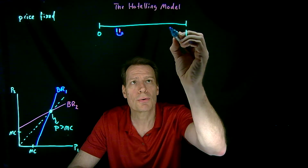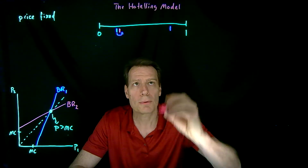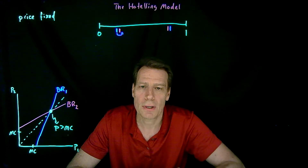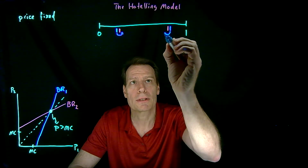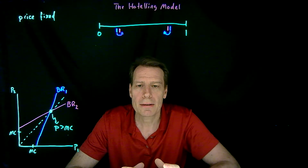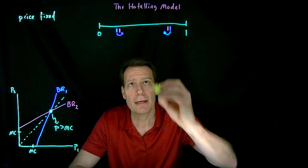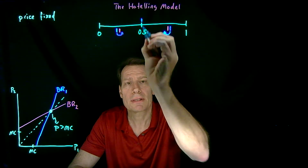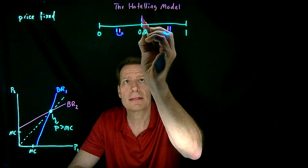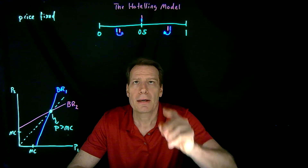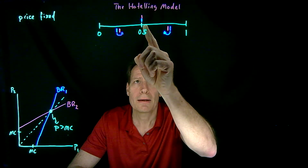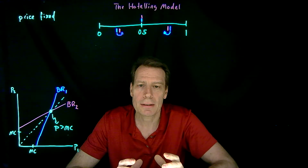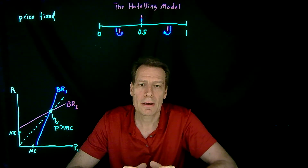The same thing would happen if firm one chose a product characteristic over here: firm two would best respond by choosing just to the left, capturing all of these consumers and leaving these to firm one. But then firm one would want to switch and so forth. If firm two moved to the right, it would get less than half the market; if it moved to the left, it would get less than half the market. The only way to get half the market is to produce exactly the same product that firm one is producing.